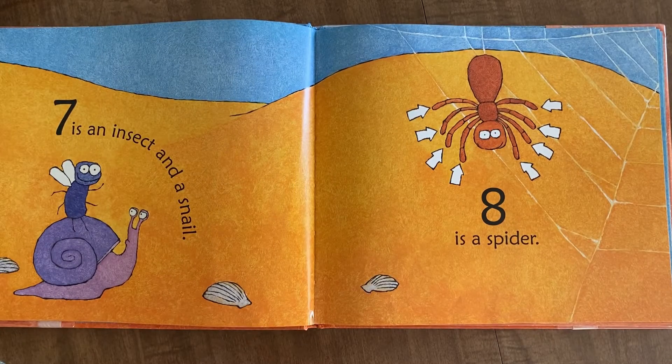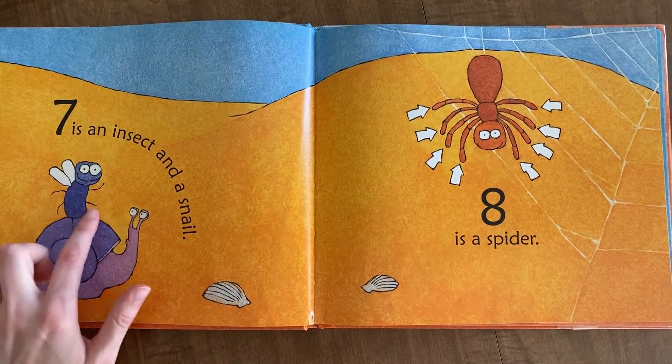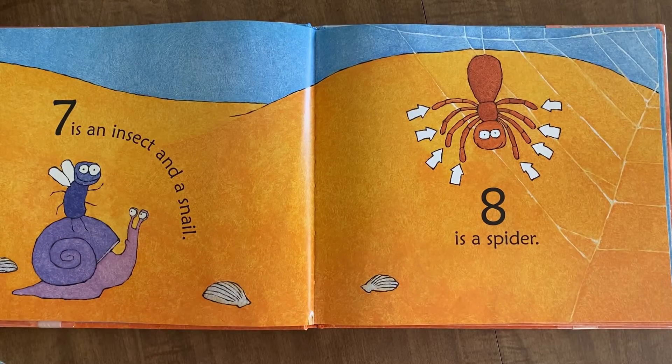Seven is an insect and a snail. One, two, three, four, five, six, seven.